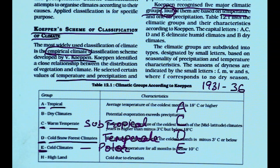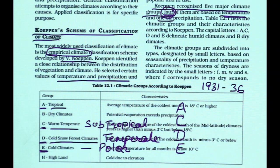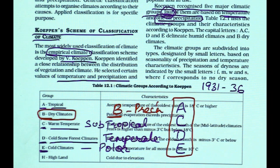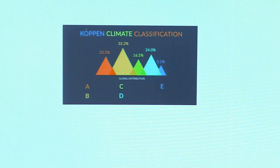Four categories are temperature-based and one is based on precipitation. The climate type based on precipitation is B — dry climate. B type is the only climate type based on precipitation. A, C, D, and E are temperature-based. This essentially relates to the 1931 scheme.